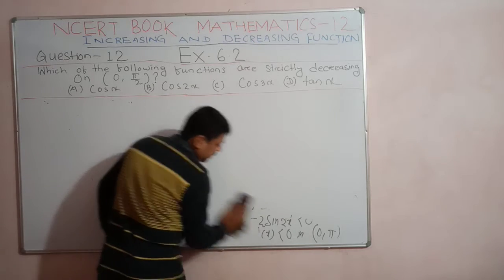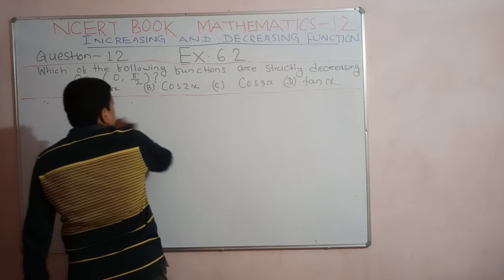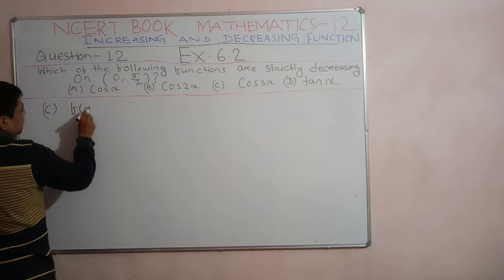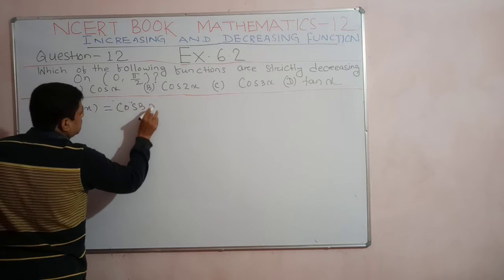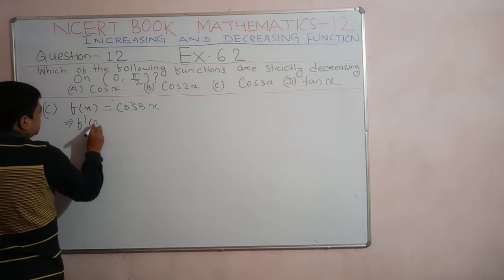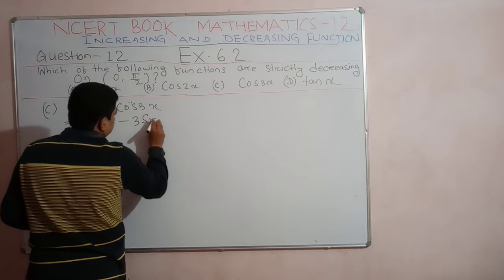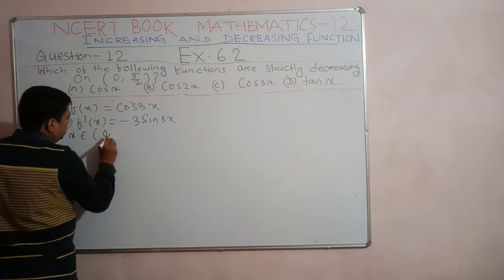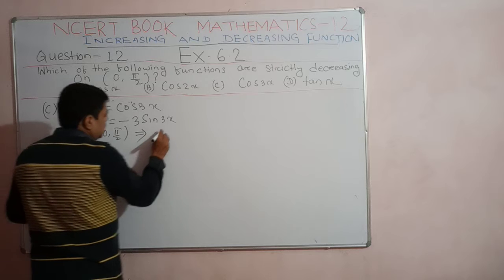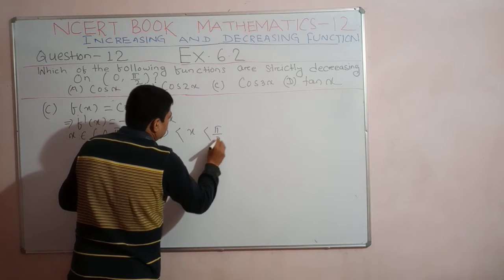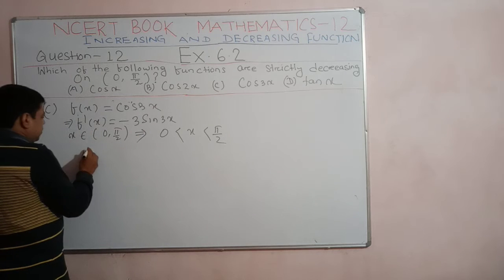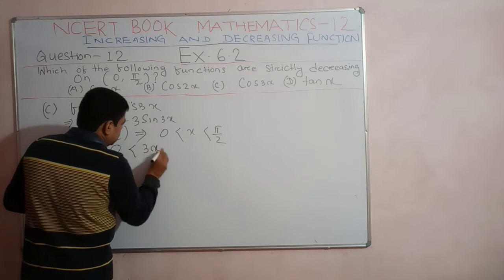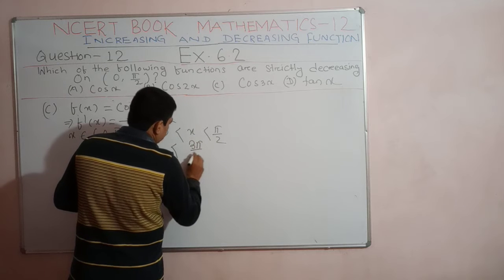For part (c), the third function given is f(x) = cos 3x. Finding the derivative: f'(x) = minus 3 sin 3x. The domain is x ∈ (0, π/2), which means 0 < x < π/2. Since the angle is 3x, multiply by 3 on both sides: 0 < 3x < 3π/2.